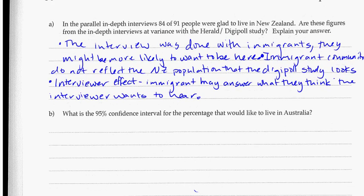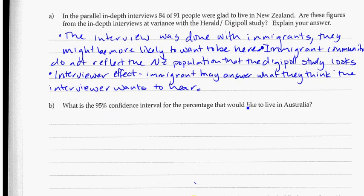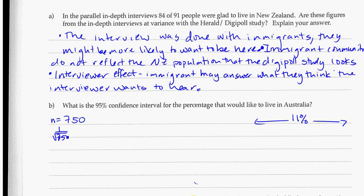So this is the question we're going to be looking at: what is the 95% confidence interval? We've already established that it's 11%. We want to know basically how far below and how far above that it's going to be. My population was 750, so my rule of thumb is going to be 1 over the square root of 750, and that's equal to roughly 3.7. To create my confidence interval, I'm going to go from the 11% in the middle minus 3.7 to figure out how low it goes.